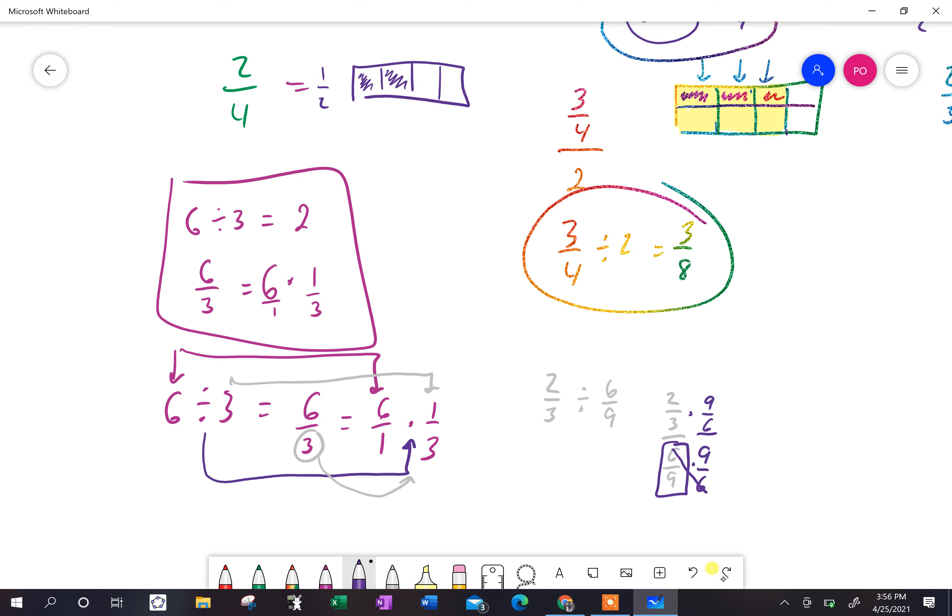Six, this is going to be six times nine, which is 54. And that's going to be nine times six, which is 54. 54 over 54 is one.